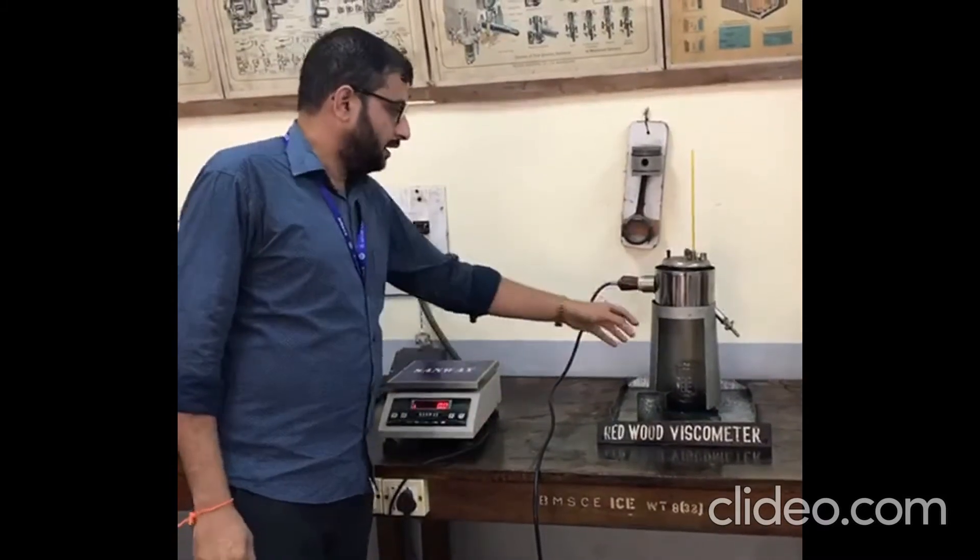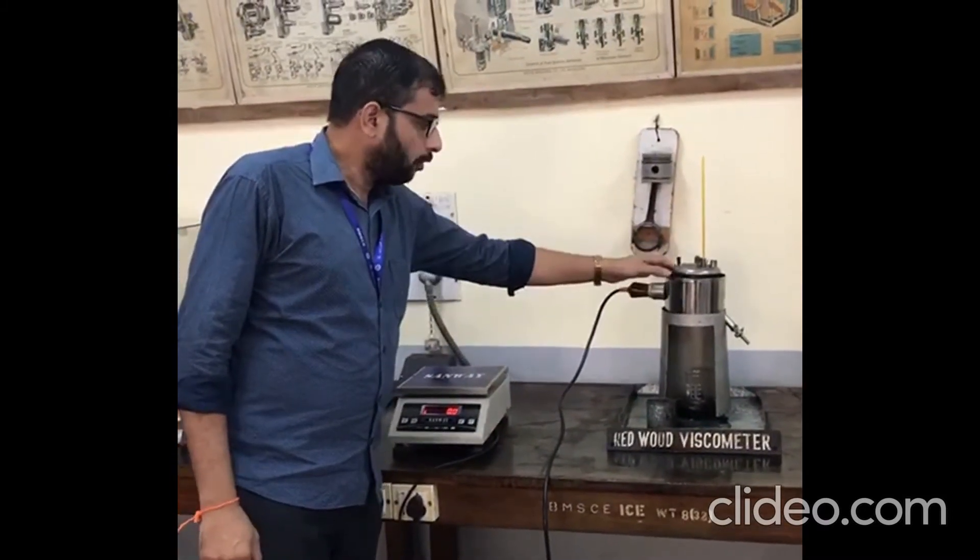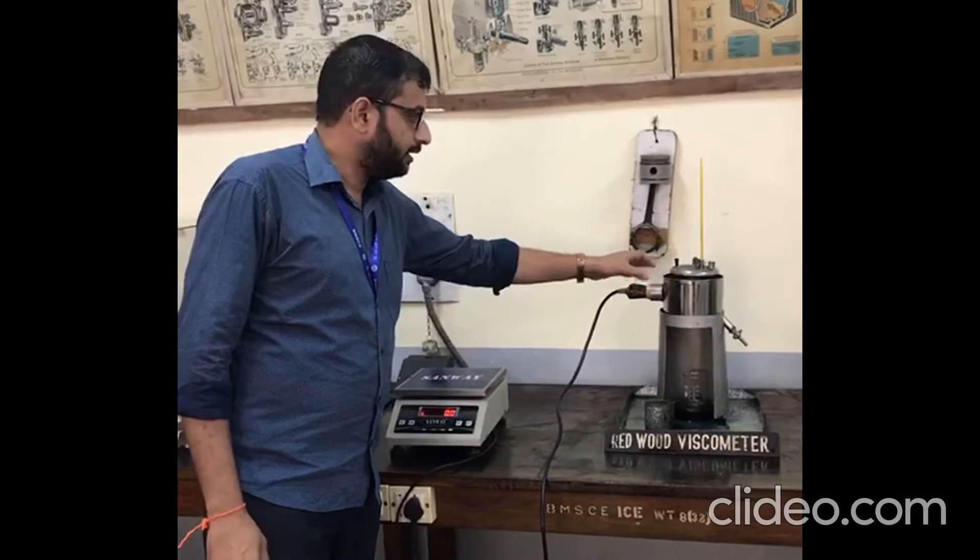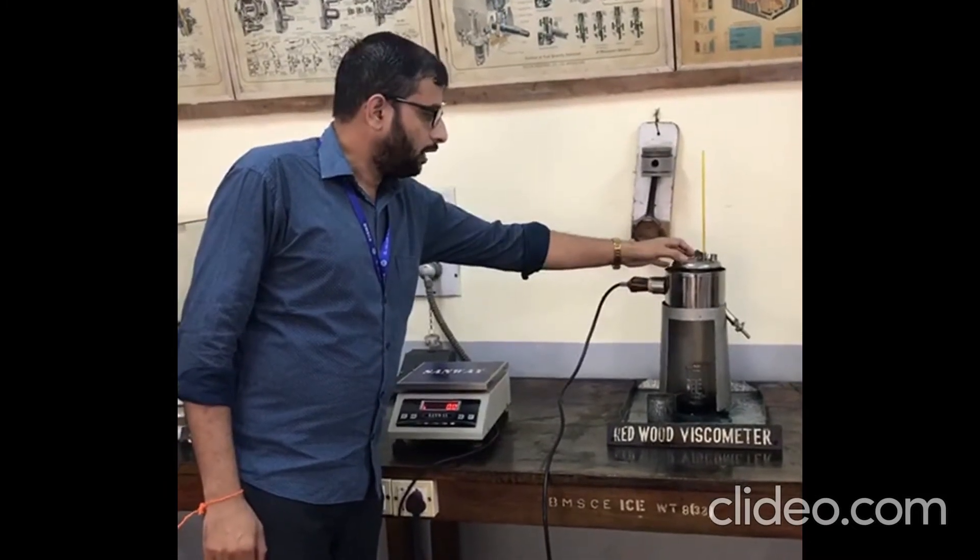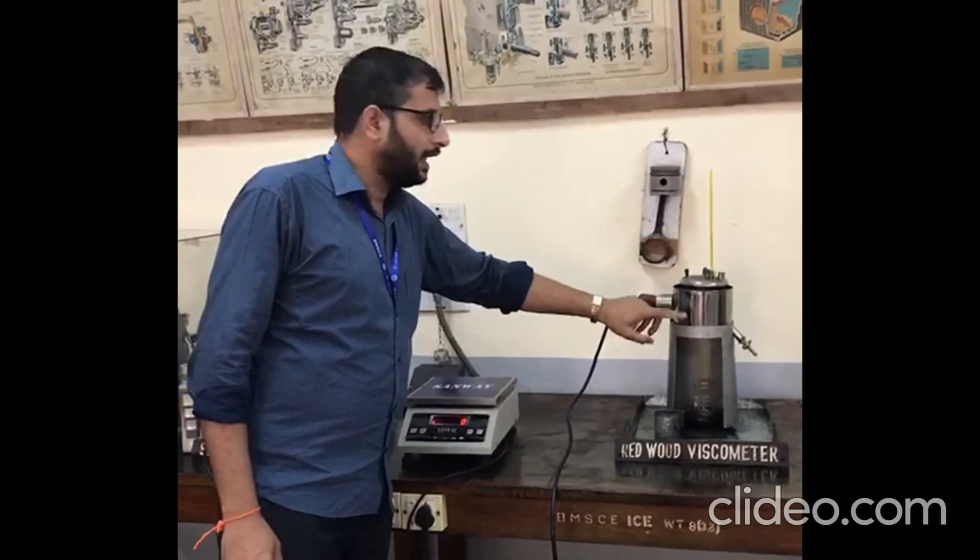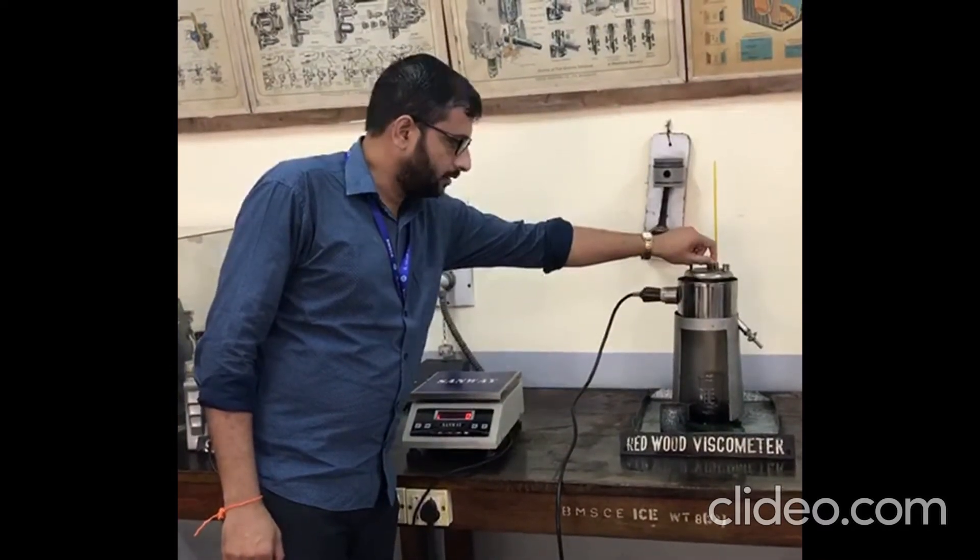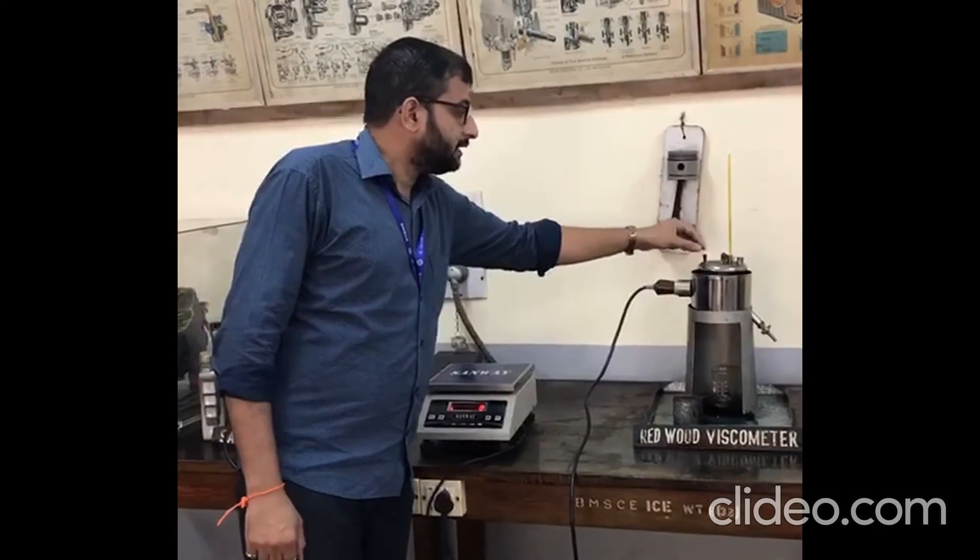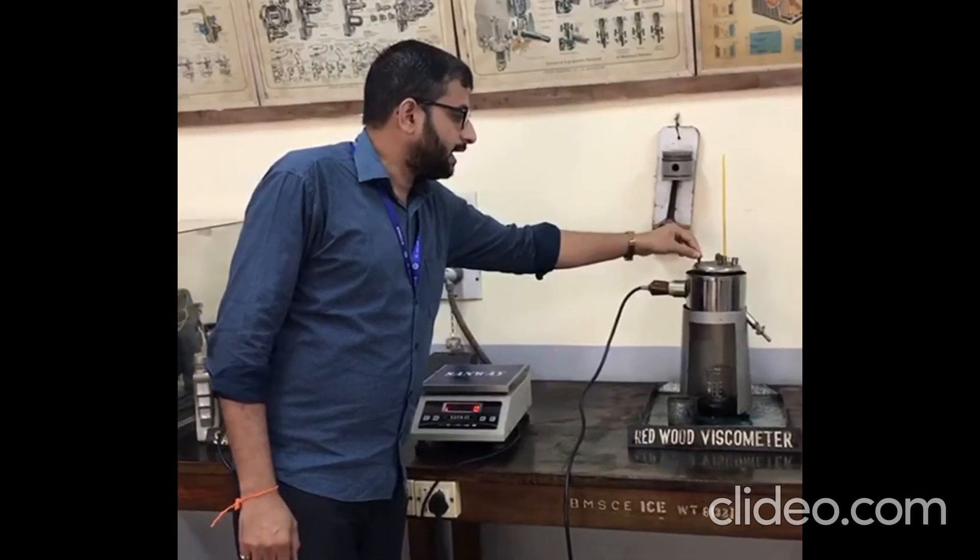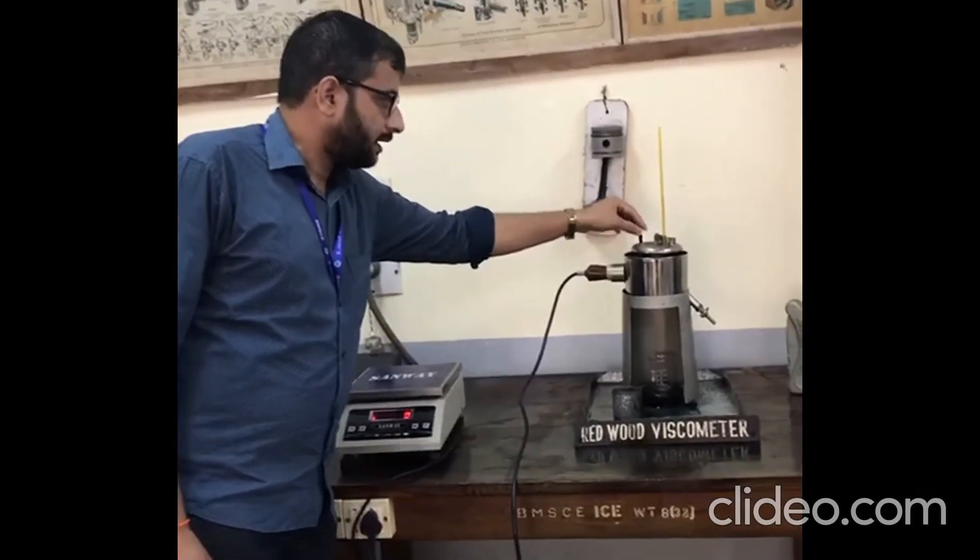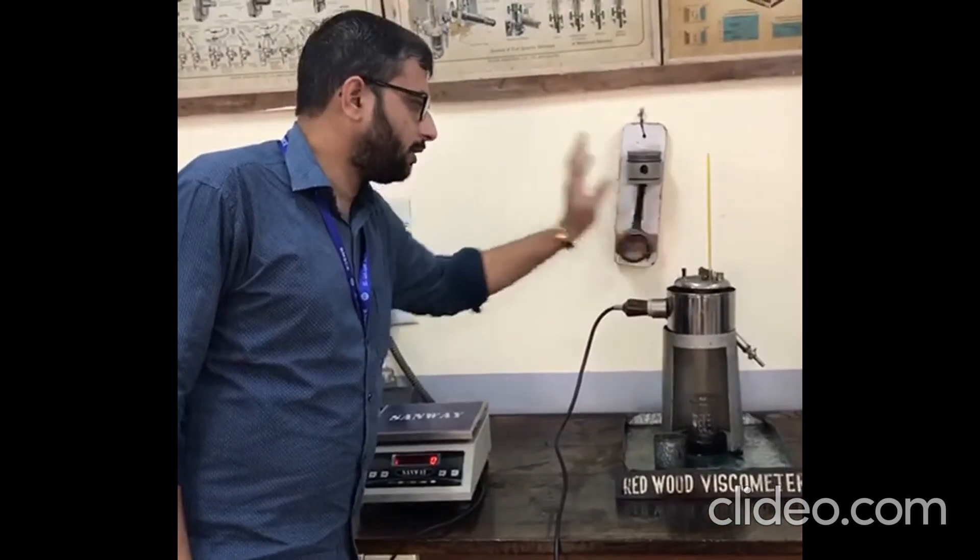The setup consists of a stand, water bath with heater, and oil bath. The oil bath contains an orifice at the bottom, and to cover this orifice we have a palm. This setup consists of a mechanical stirrer and thermometer to measure the temperature of the oil bath.